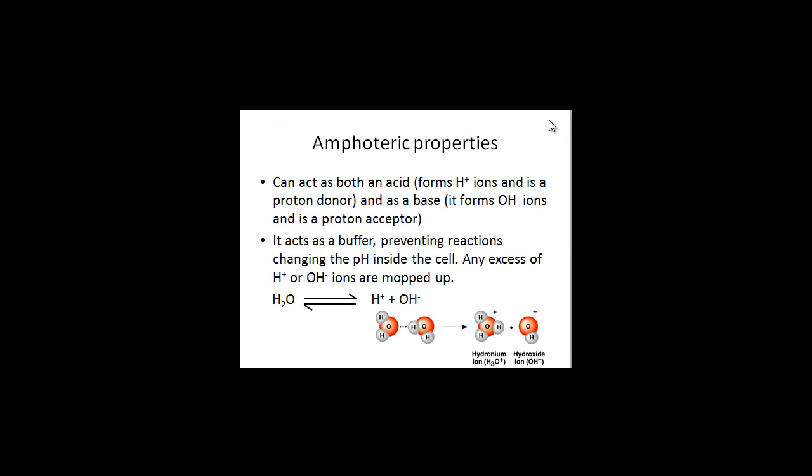Now water also has some amphoteric properties as well. In fact, it can act as both an acid and as a base, but before that, we need to look at the dissociation of a water molecule. So here you've got two water molecules, and you can see that one hydrogen atom has actually left its electron behind and traveled as a single proton, or a hydrogen ion, and joined up with this water molecule, forming hydronium, or a hydronium ion. What you're left behind with is a hydroxide ion.